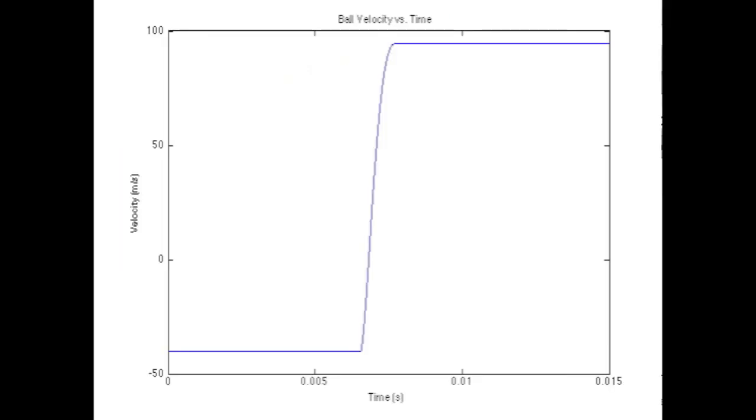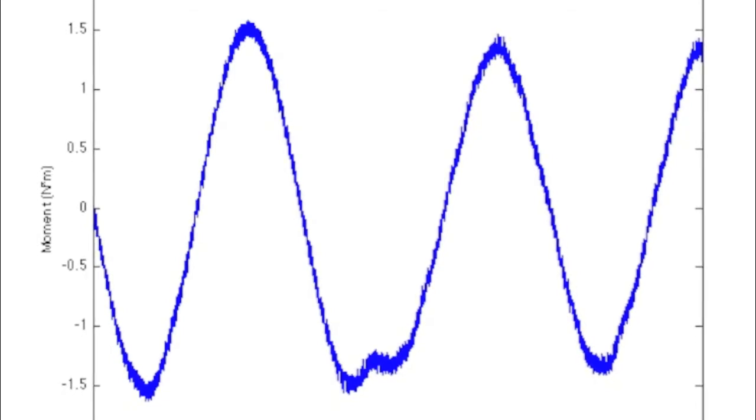Let's consider the impact on the eighth link. To analyze the impact, the velocity of the ball was plotted, along with the moment acting on the bat. For the moment, we only need to consider the time of impact.